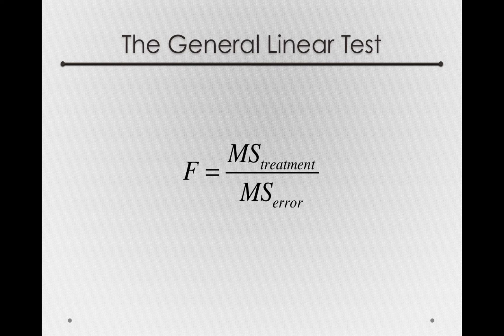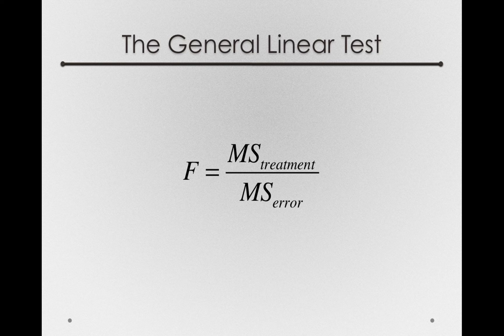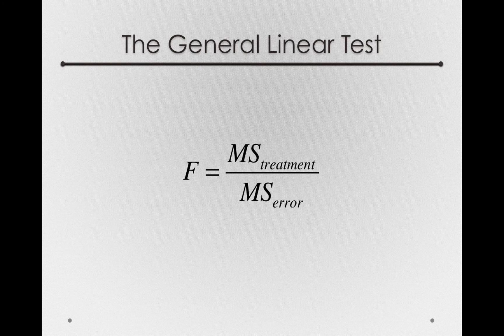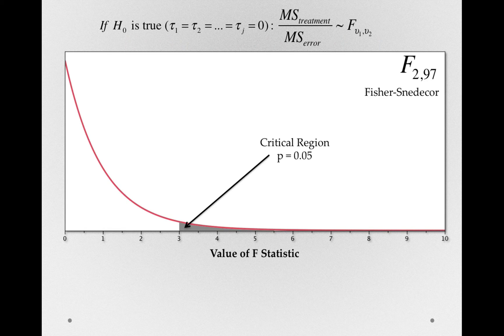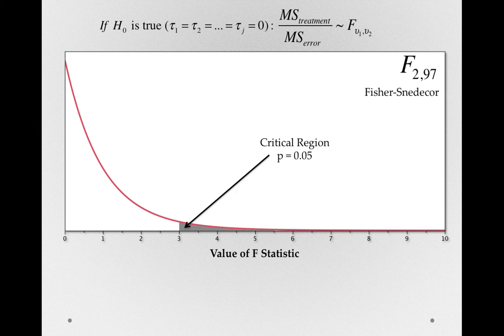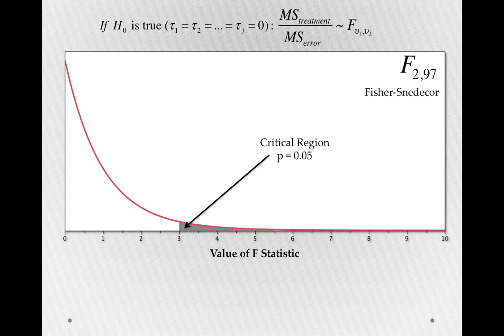And so given this general linear test or the analysis of variance test statistic, we still end up with under the null hypothesis, a Fisher-Snedecor distribution with two numerator degrees of freedom and 97 denominator degrees of freedom.